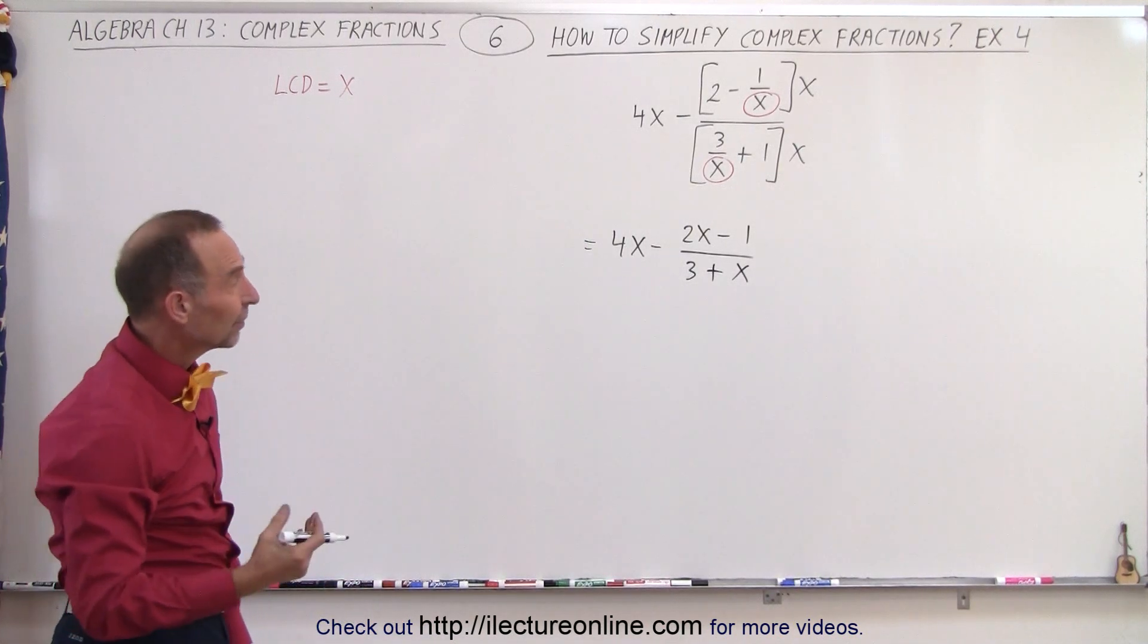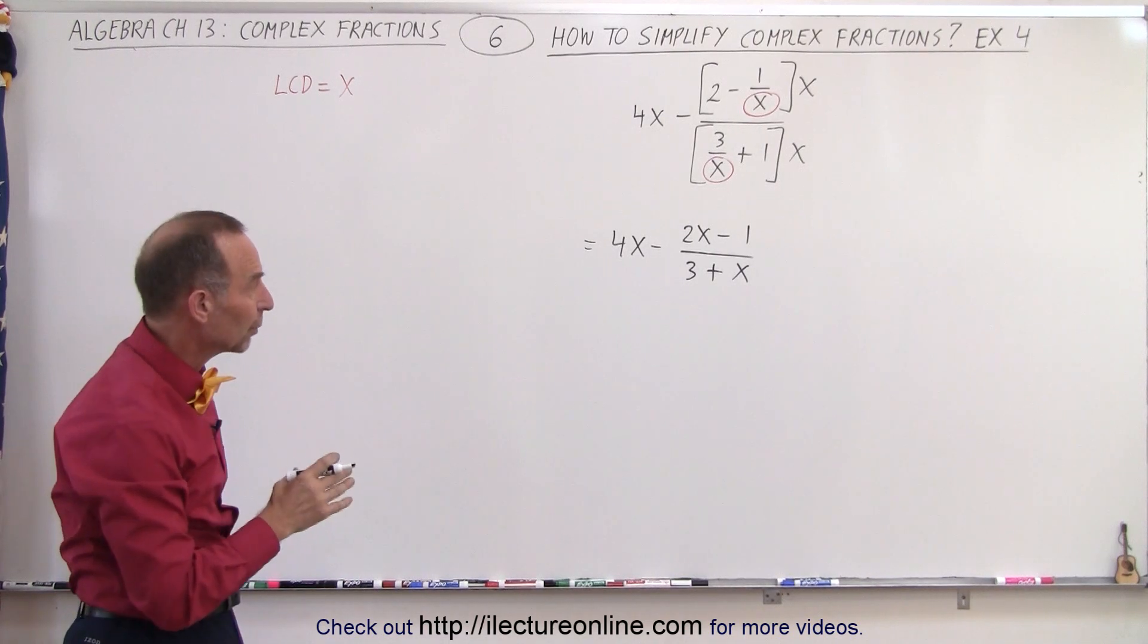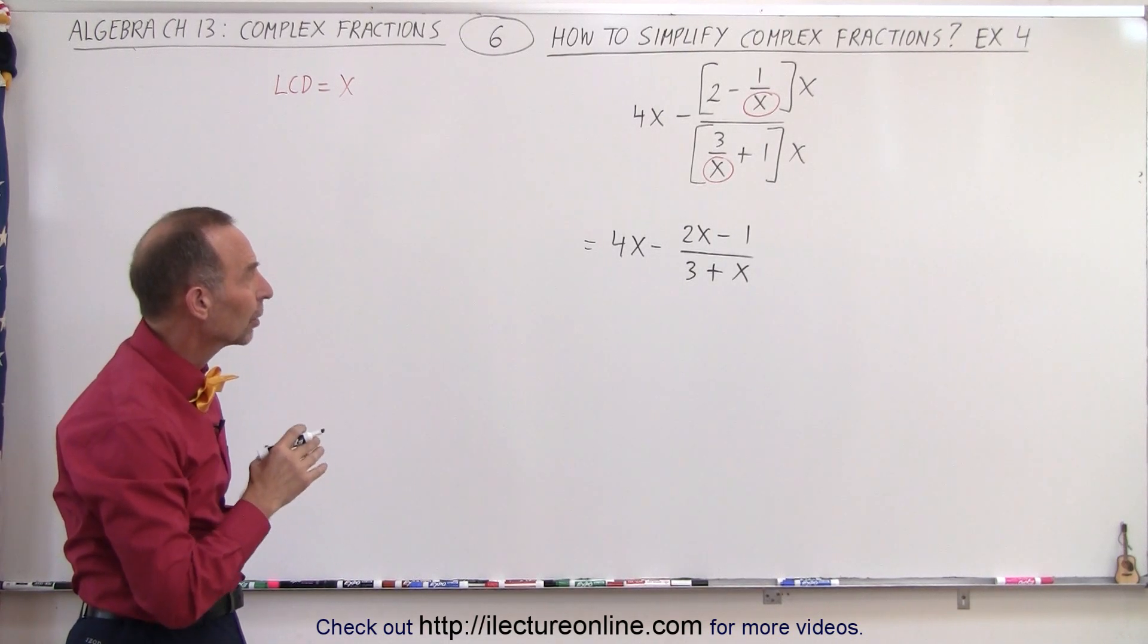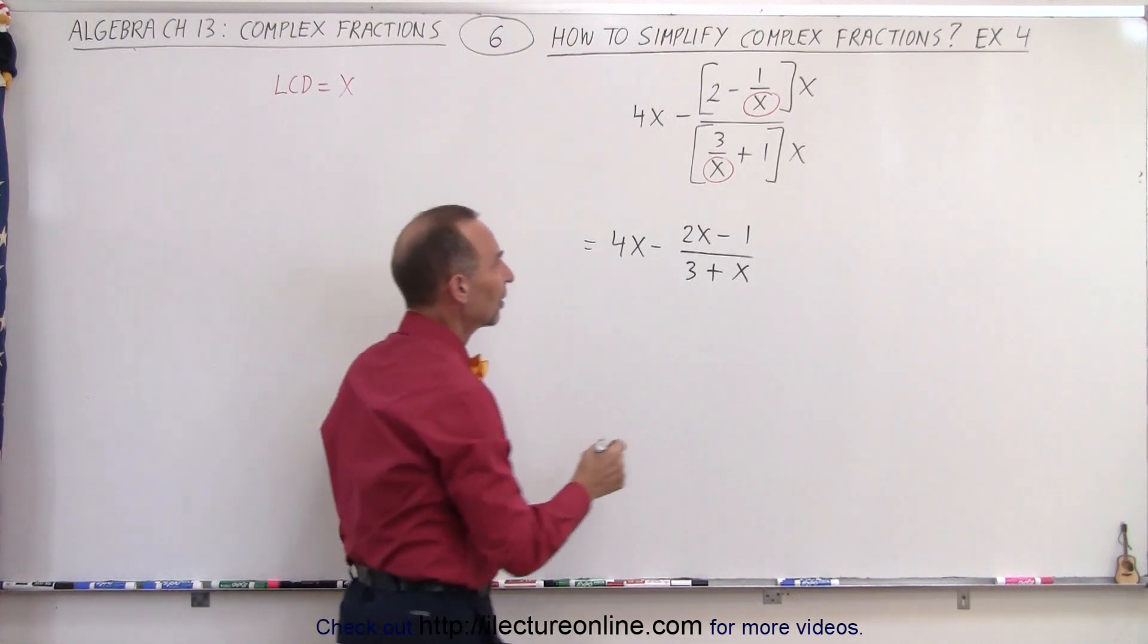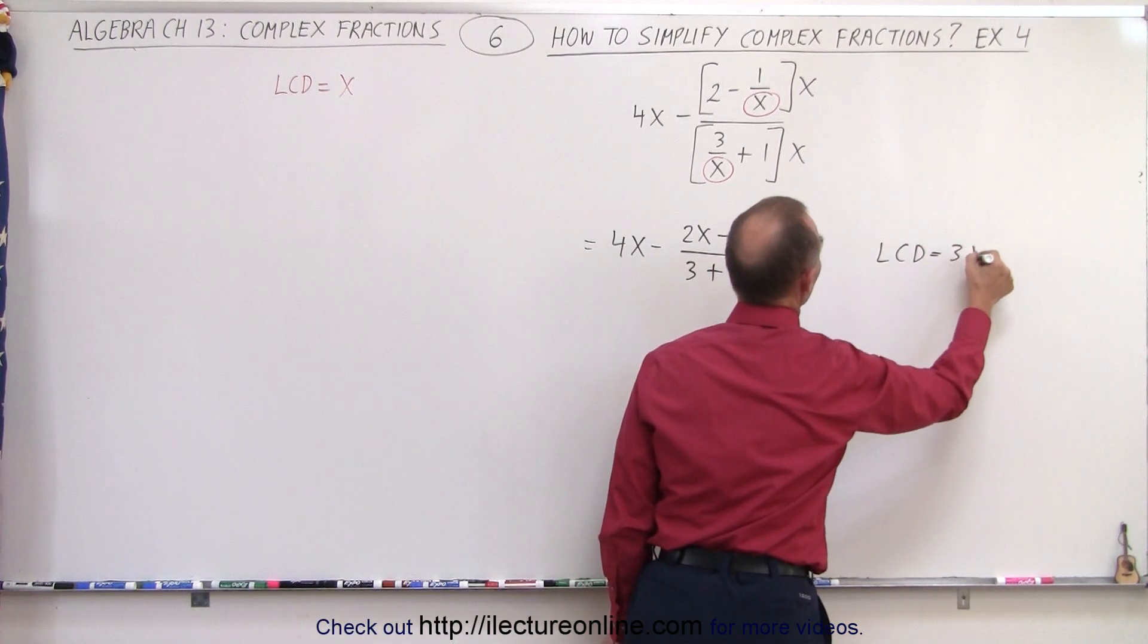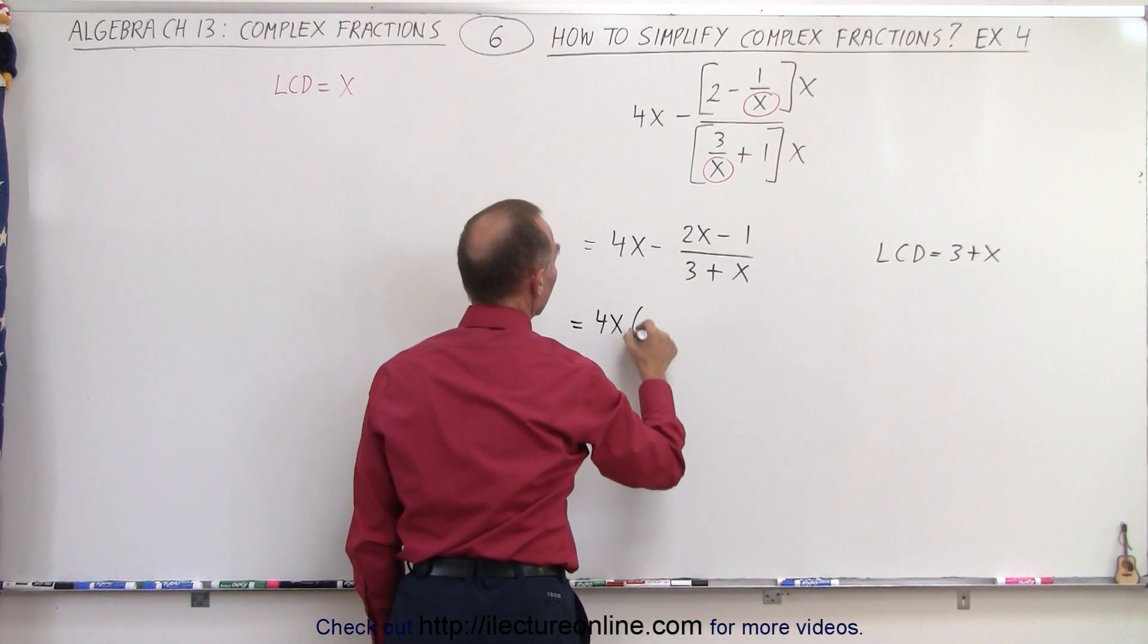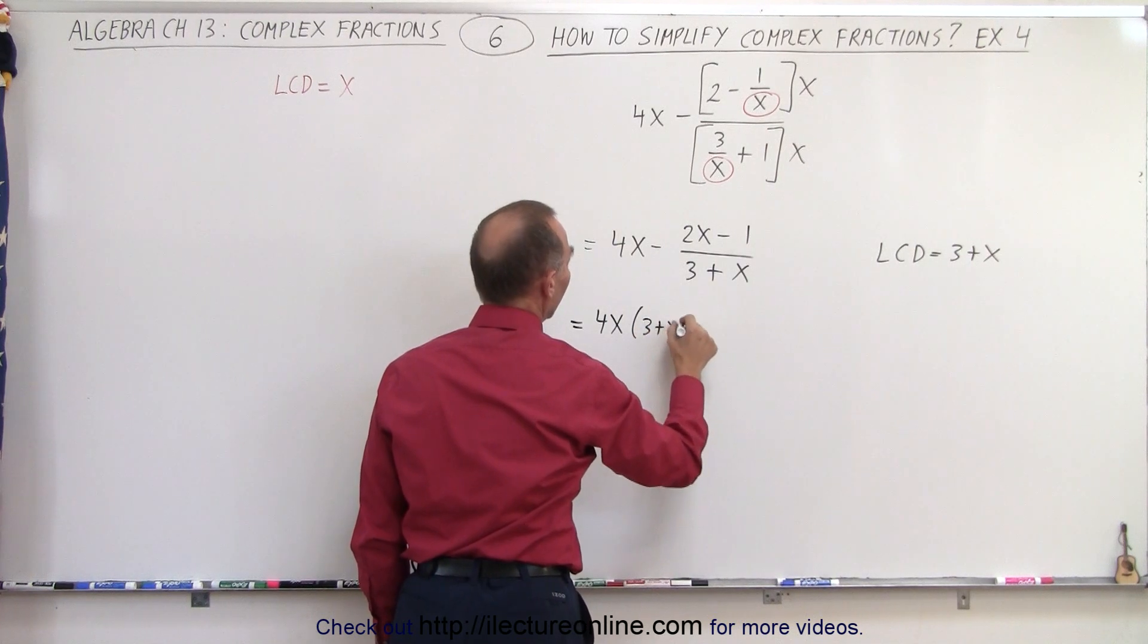Now think of this as a rational expression subtracted from 4x. So now here we're going to need the same common denominator. So in this case, the lowest common denominator is equal to 3 plus x.